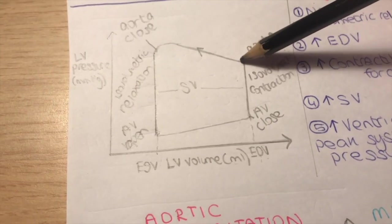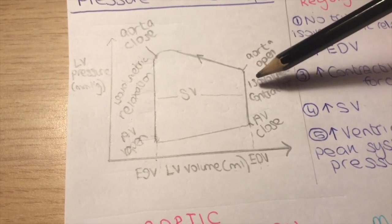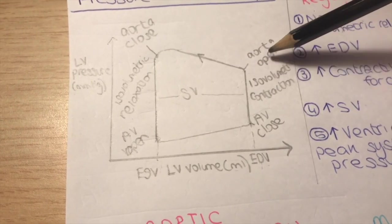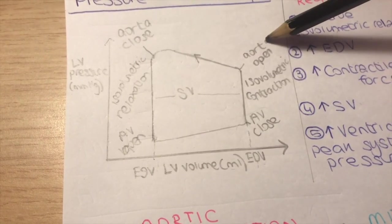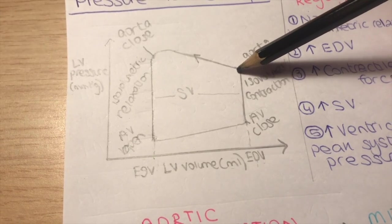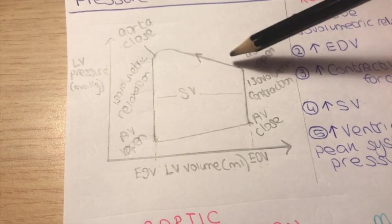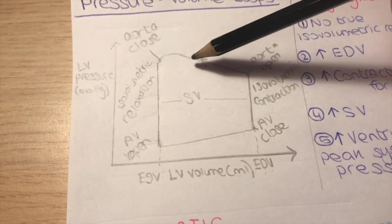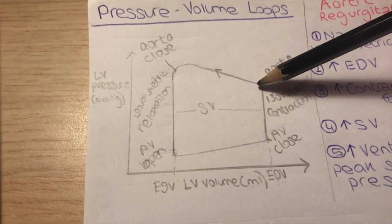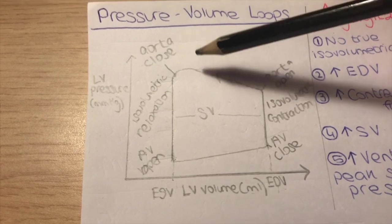At this point, the pressure in the ventricle becomes higher than the pressure in the aorta, which causes the aortic valve to open. This is when the left ventricular volume decreases because the aortic valve is open and blood flows from the ventricle into the aorta to circulate around the body.